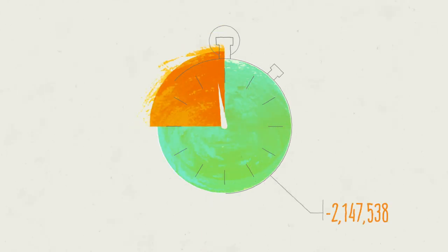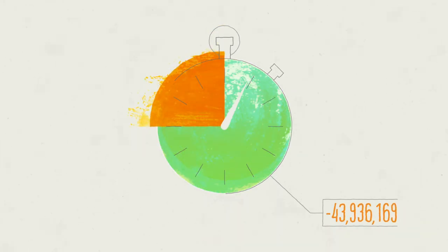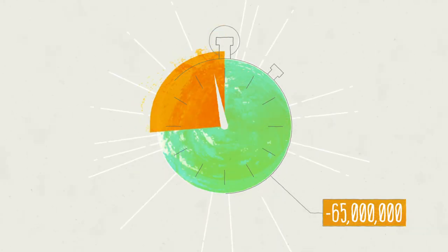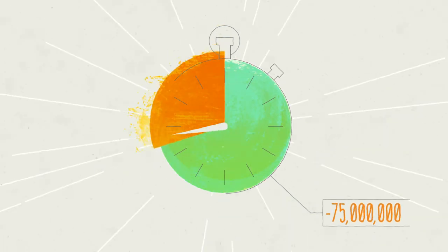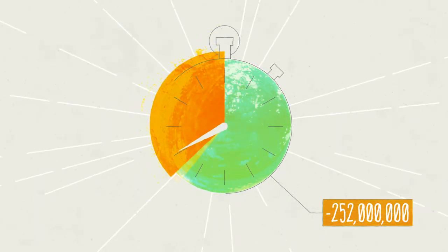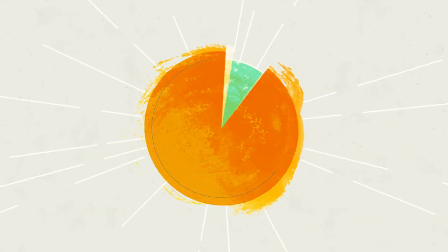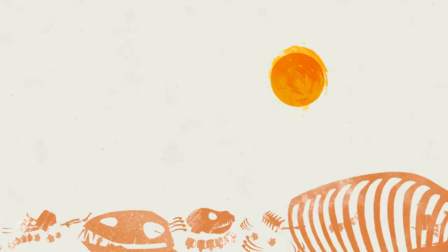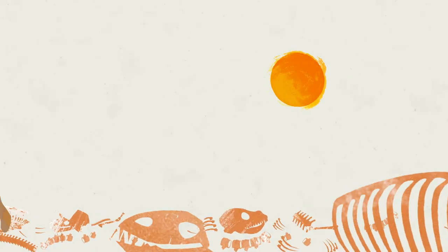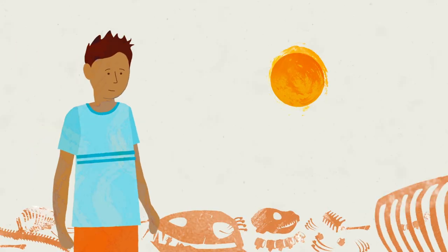Our climate is changing faster than it has for at least 65 million years, probably closer to 252 million years. Back then, around 90 percent of all species vanished forever in an event called the Great Dying. It may be happening again now, and humans are responsible.